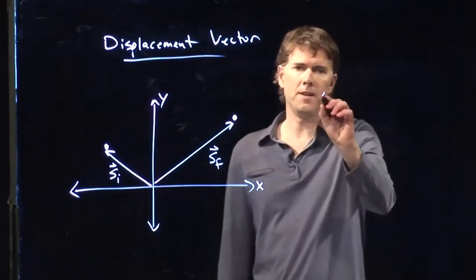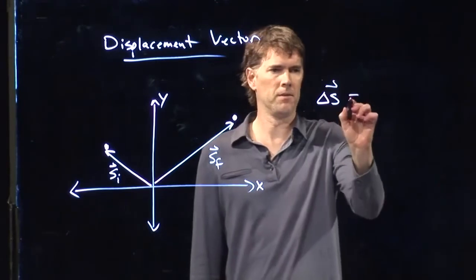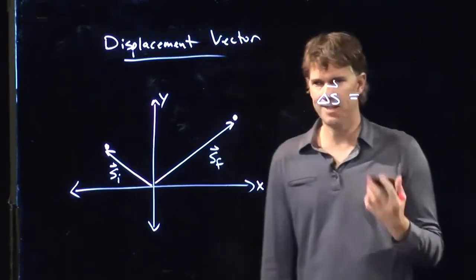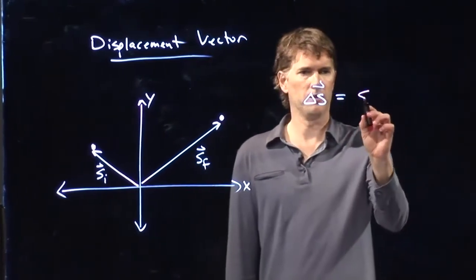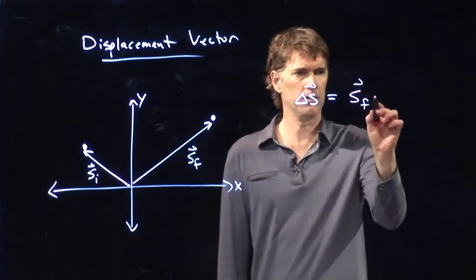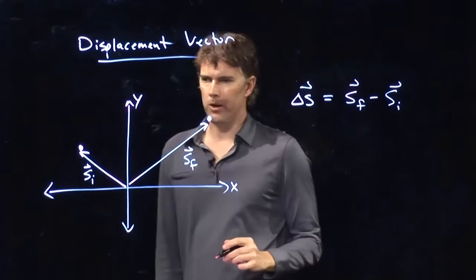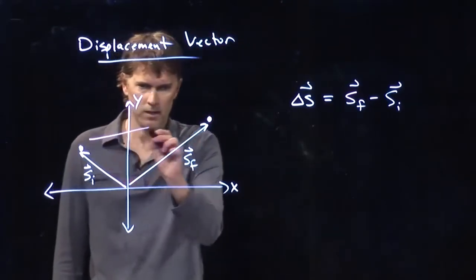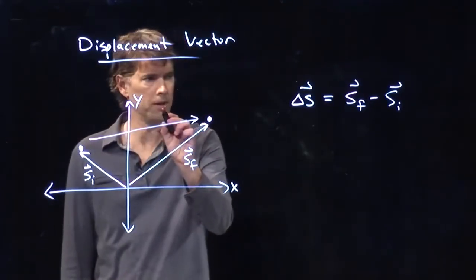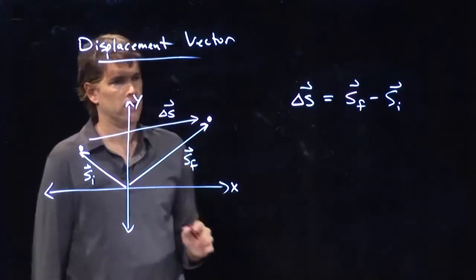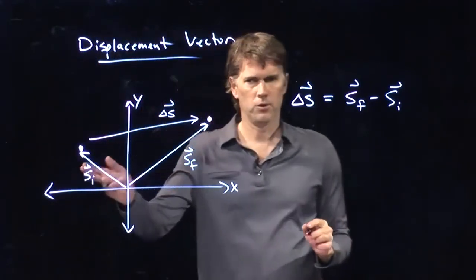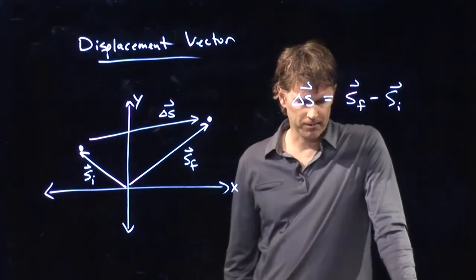And therefore, delta S is going to be the difference between the two. It's going to be the final location minus the initial location. And we know exactly what that should look like. It should look like that right there. From where you started to where you ended, that's what delta S looks like.